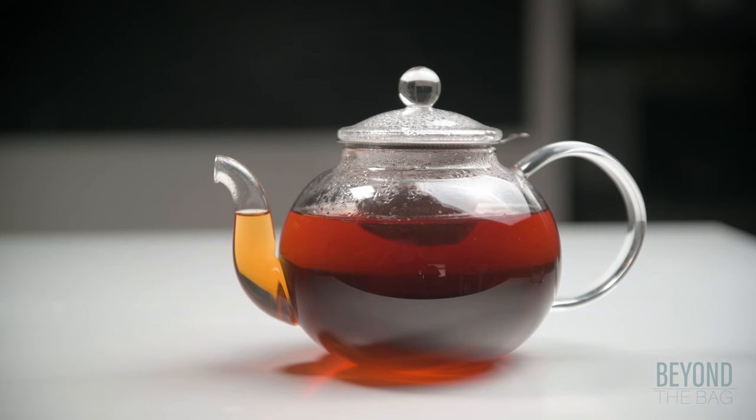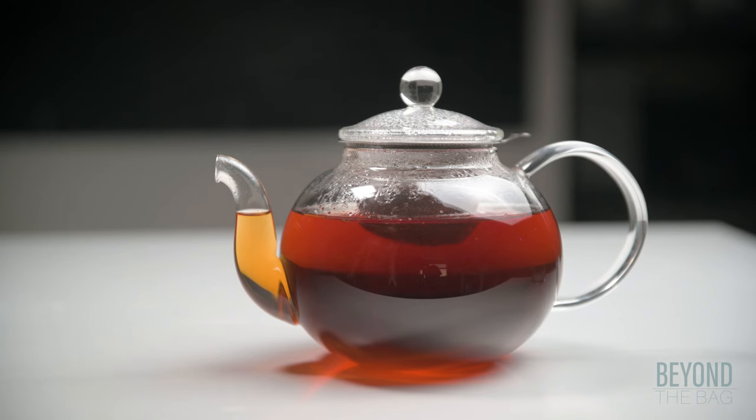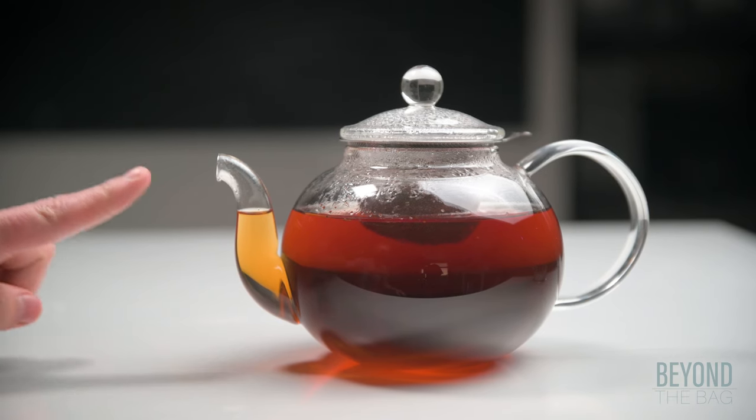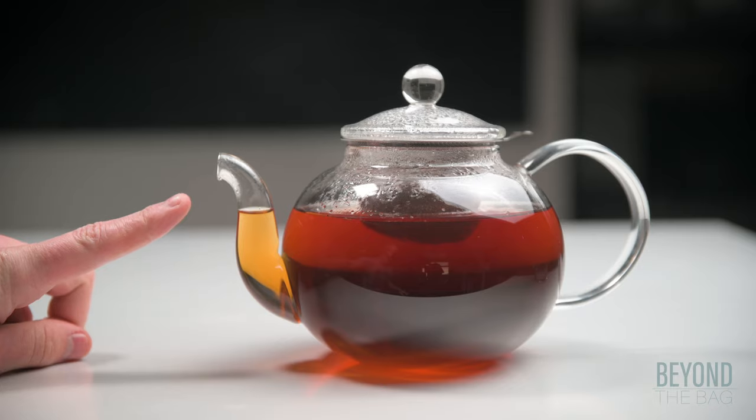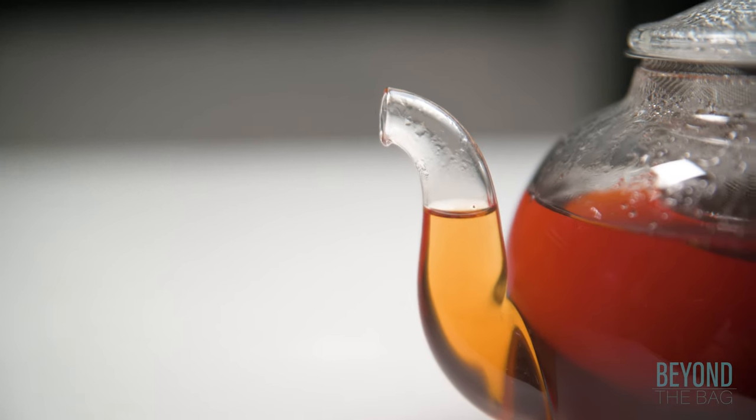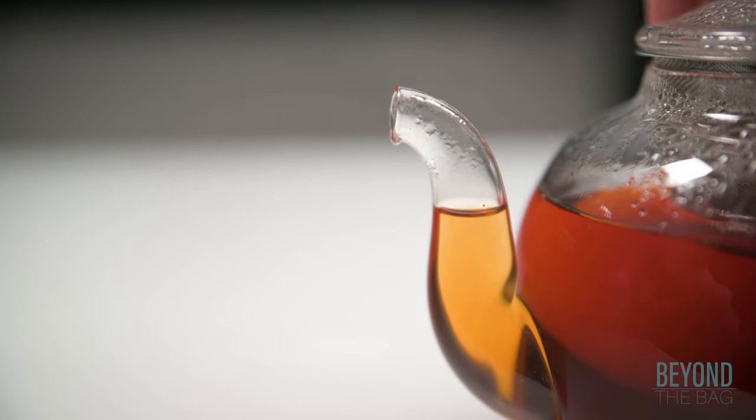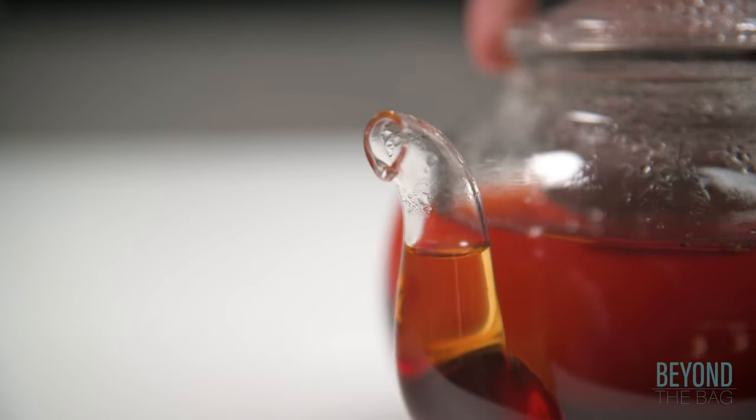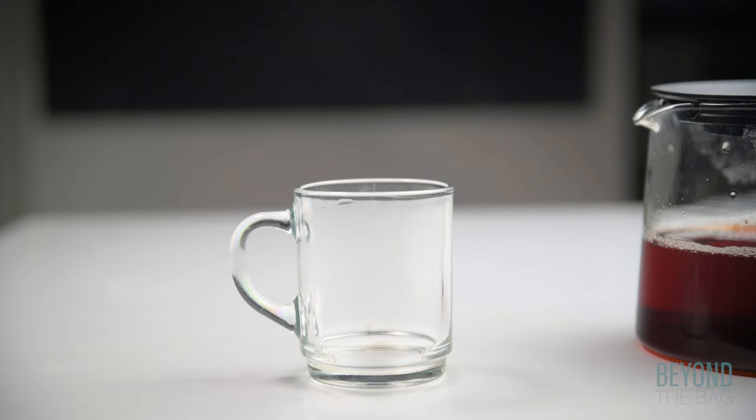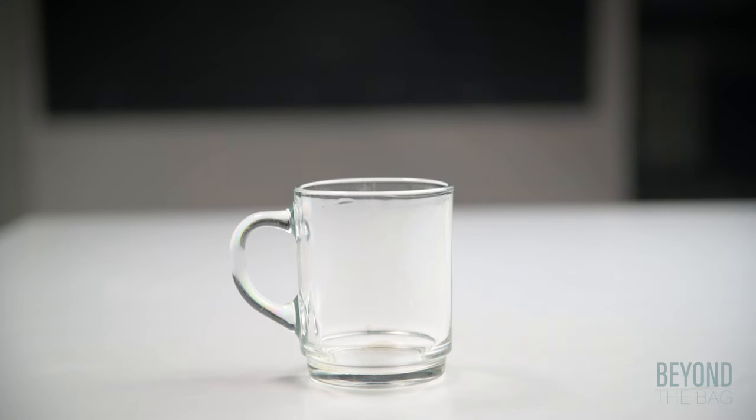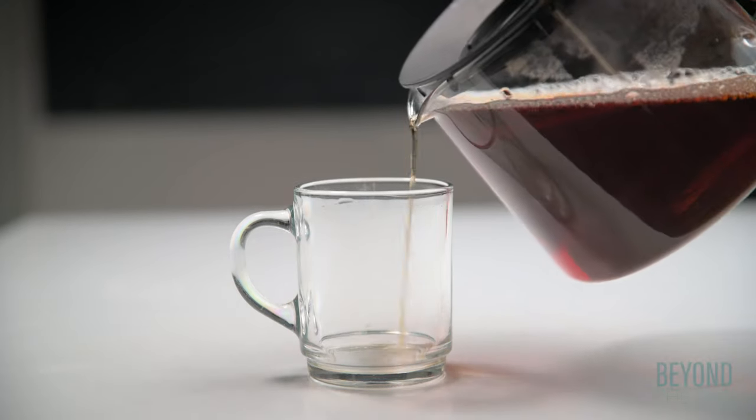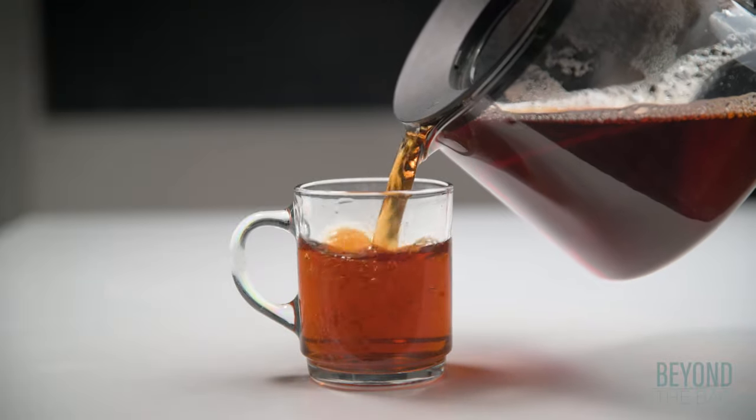So what is the most overlooked detail when considering which teapot to get? This little thing here at the end of the spout. This is an anti drip spout. On the outset this might seem somewhat minor but a good spout is worth its weight in gold. This allows you to pour a neat satisfying spill free cup of tea with ease.